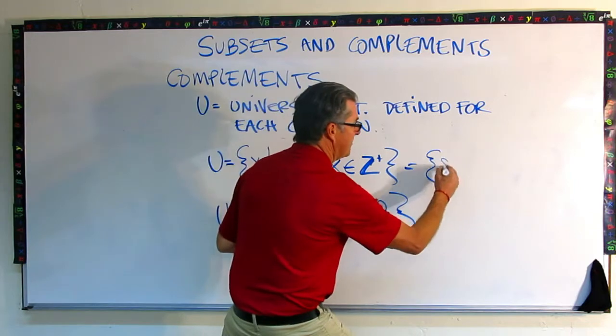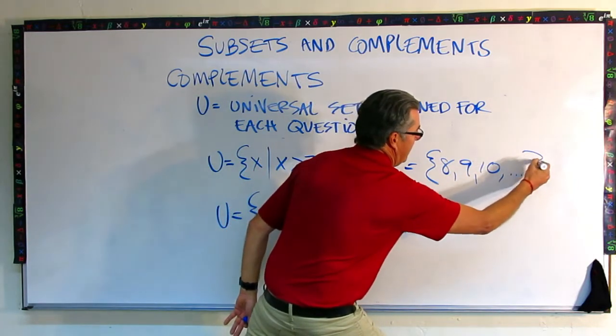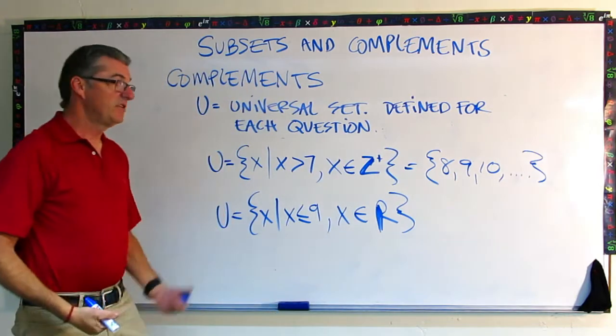Remember, Z stands for integers, and when we put that little plus out there, that means we only want the positive integers. So this universal set, all x such that x is greater than 7 and is an element of the positive integers. So we could write this like this: greater than 7 means we would start with 8, 9, 10.